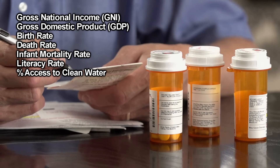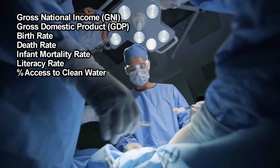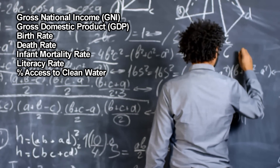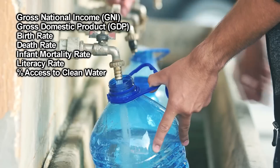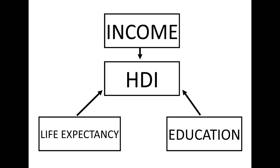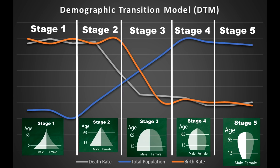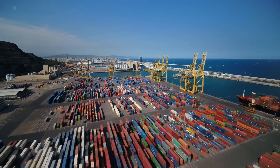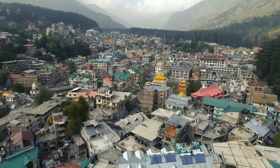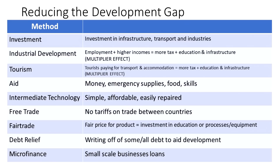We then look at how we can measure development. You may be presented with a map of world development, so you should understand how to interpret these maps. The Human Development Index (HDI) is one of the best ways of measuring how developed countries are. You should also demonstrate understanding of the Demographic Transition Model (DTM), which shows the different stages of development a country has gone through. You may also have looked at uneven development, the Gini coefficient, and different methods of reducing the development gap.